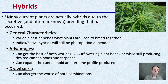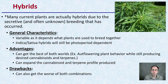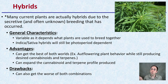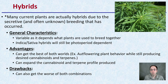Many current plants are actually hybrids due to secretive and often unknown breeding that has occurred. The general characteristics of these hybrids are variable, depending on which plants were used for breeding and at what percentage — it might be a sativa-indica 50-50 split, or it might favor one over the other. A true sativa-indica hybrid will still be photoperiod-dependent. The advantage is the best of both worlds: potentially autoflowering behavior while still producing desired cannabinoids and terpenes, and an expanded cannabinoid and terpene profile. The drawback is you could also get the worst of both combinations, so there is some time and refinement needed in breeding.